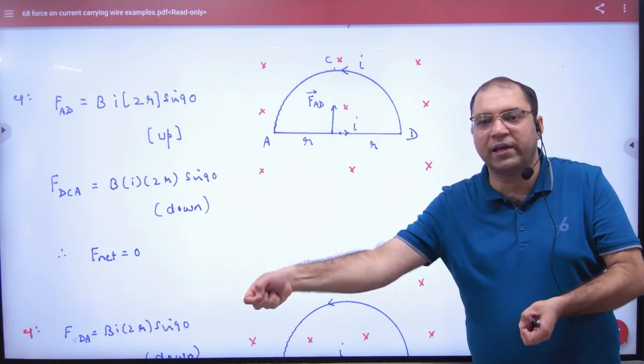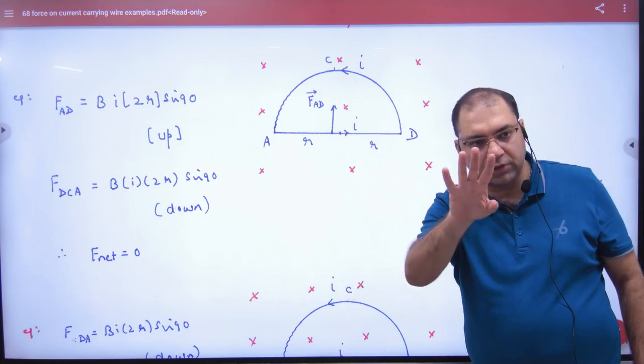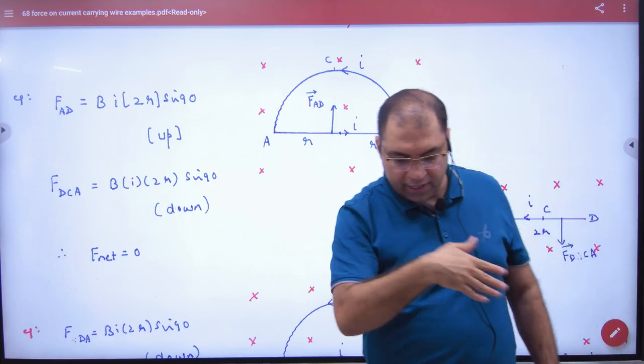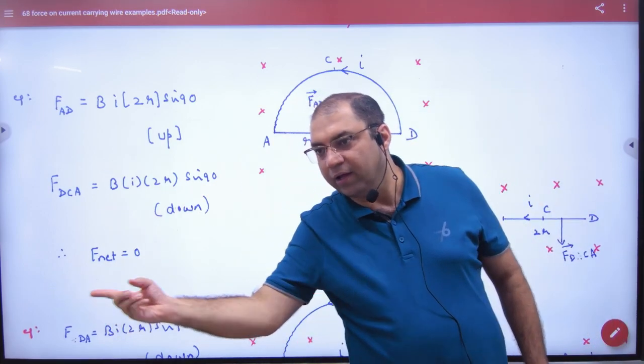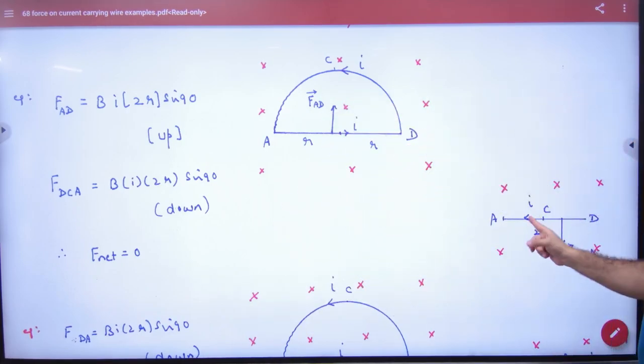The displacement is 2R. Because current is going from A to D, the equivalent for the DCA segment is current going from D to A. So what does the force look like?